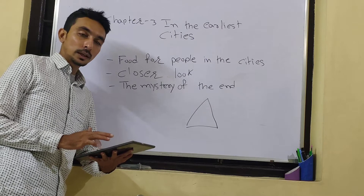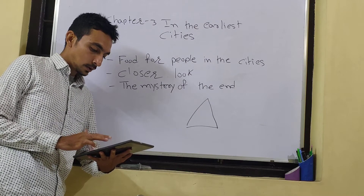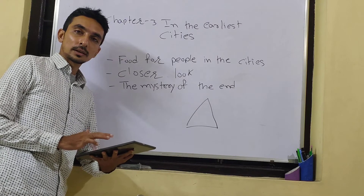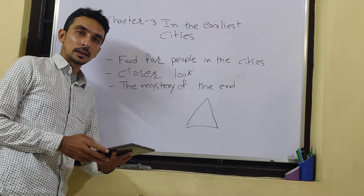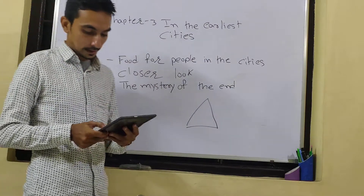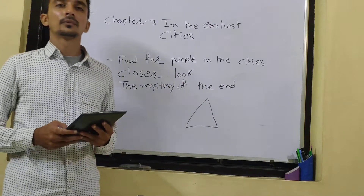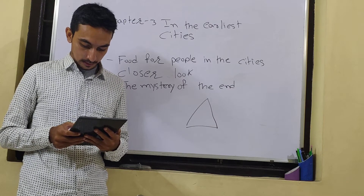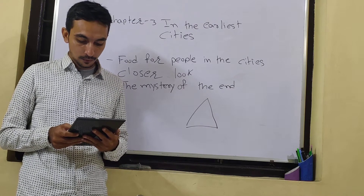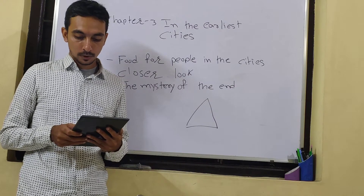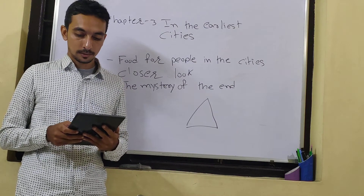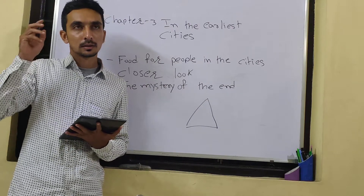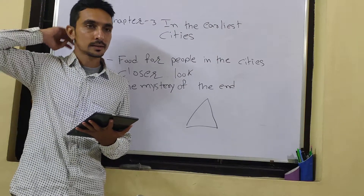I explained to you the story of Harappa — its speciality, characteristics, houses and drainage system, the city plan, life in the city, especially life in Harappa, as well as the new craft, raw material for the craft, and the food for people in the city. I taught you that Harappa consists of six main cities — Harappa, Mohenjo-daro, and other cities.